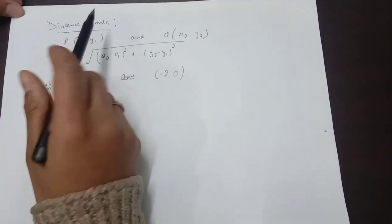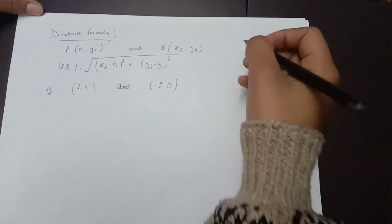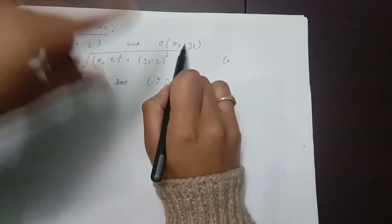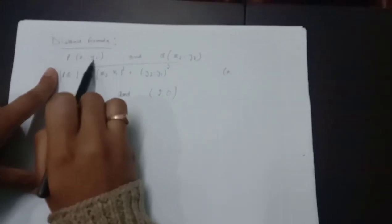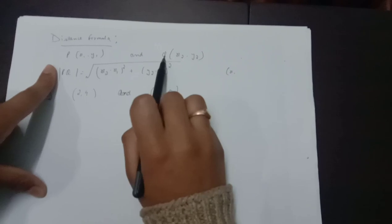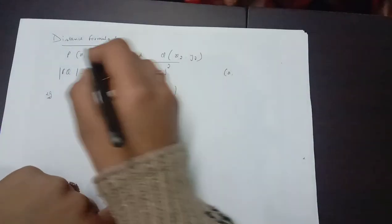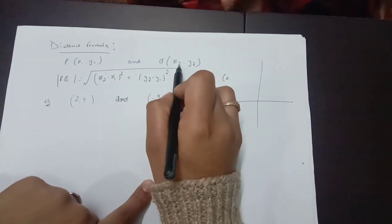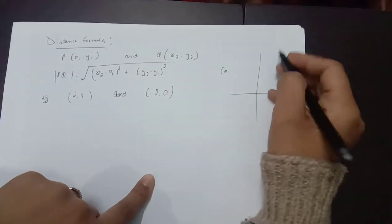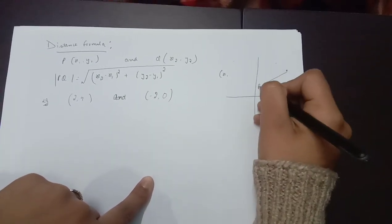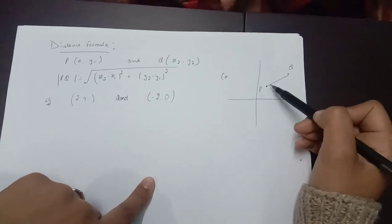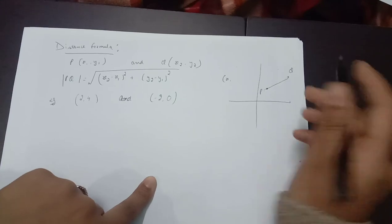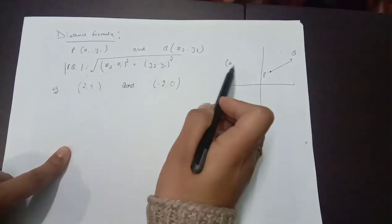Our next topic is the distance formula. The distance formula applies when you have two different points — let us say P is (x1, y1) and Q is (x2, y2). The distance formula gives us the distance between these two points.